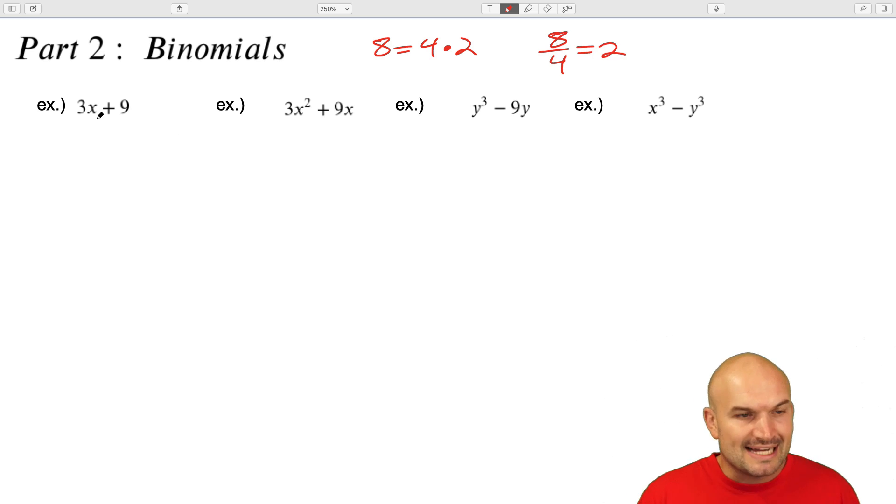So if we want to understand how we can break apart 3x plus nine into a product, we need to understand how we could maybe divide something into 3x plus nine. Because if we can divide something into it, meaning we can rewrite it as a division problem, then that means we can also rewrite it as a multiplication problem.